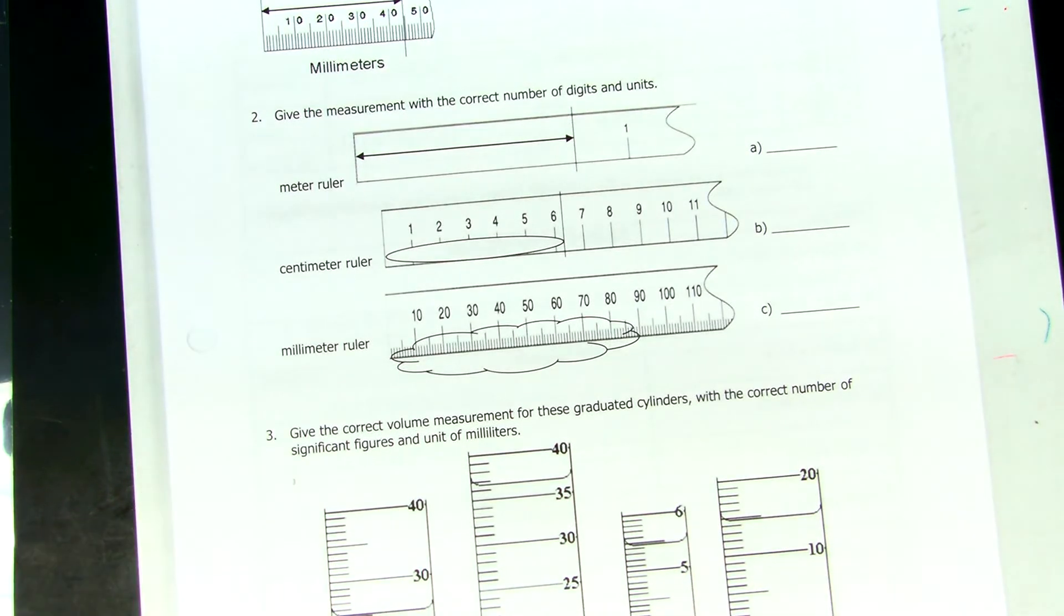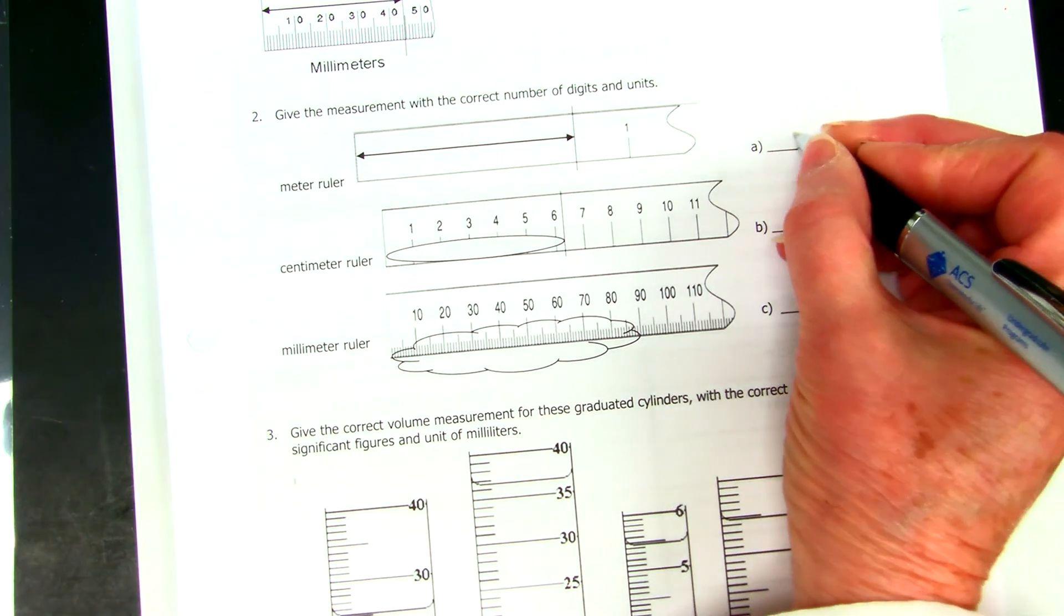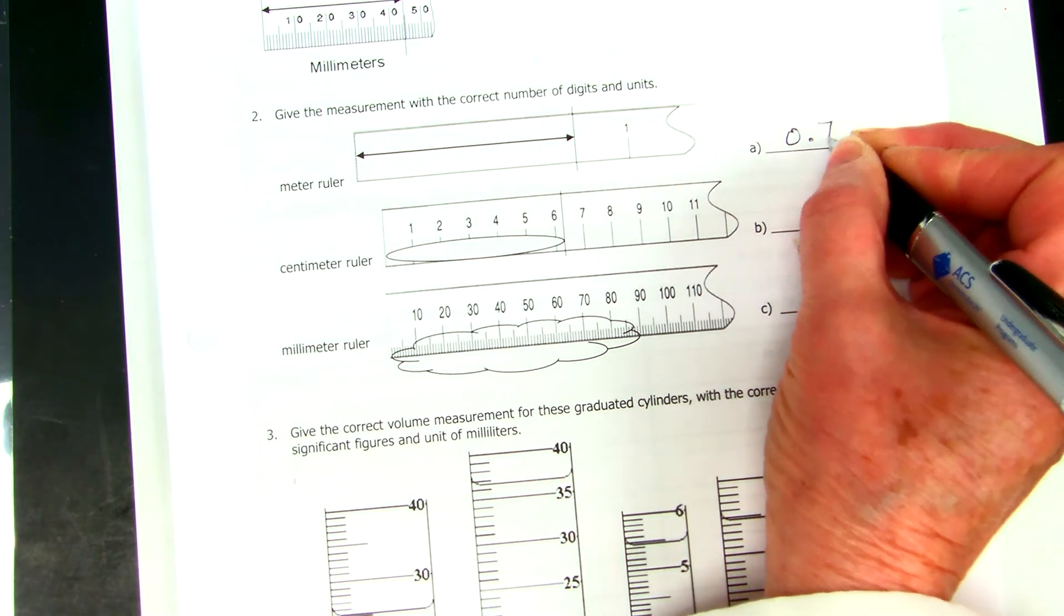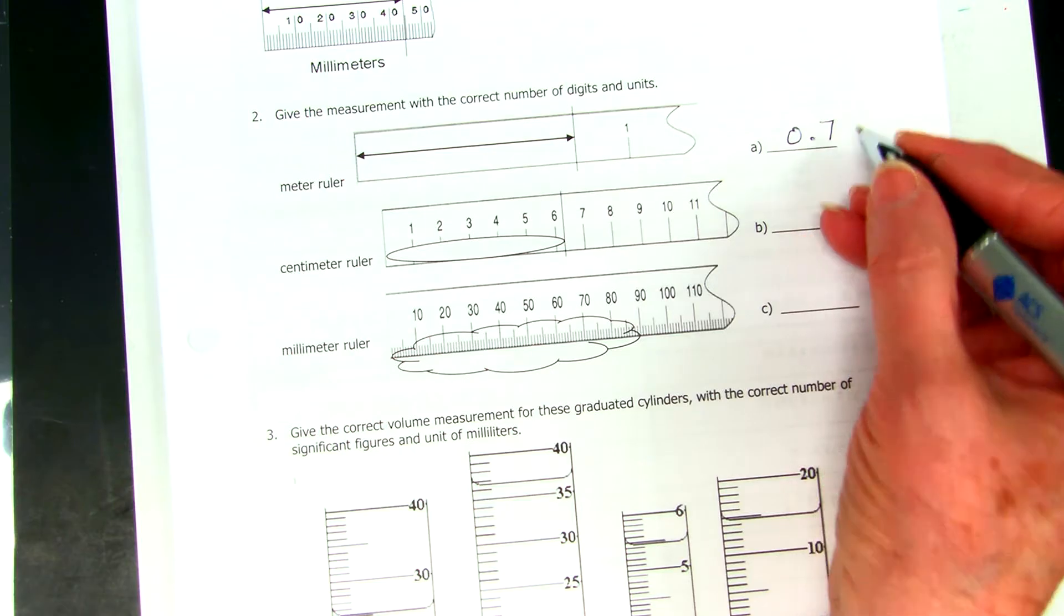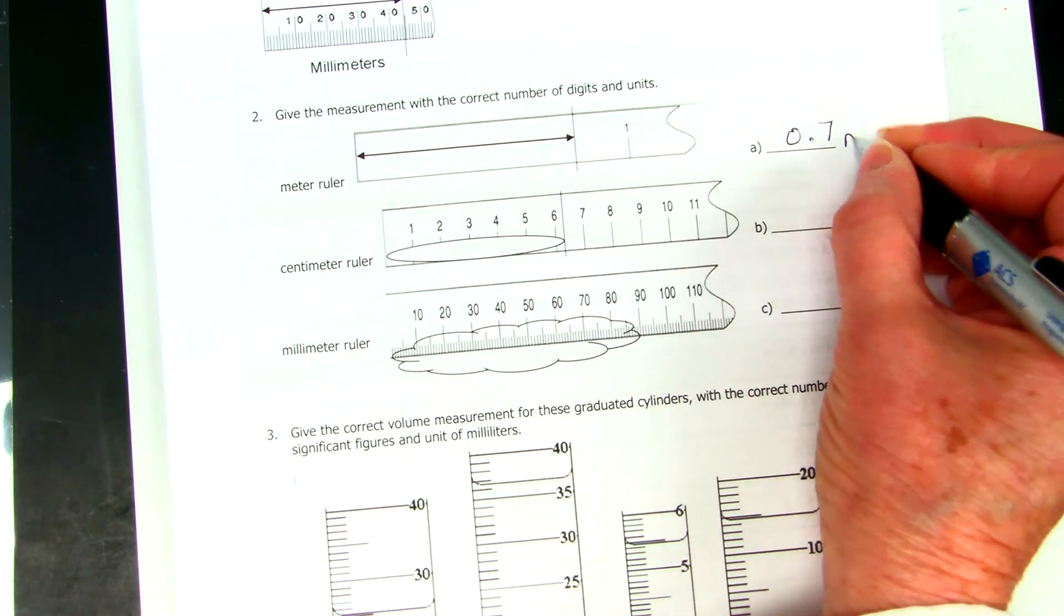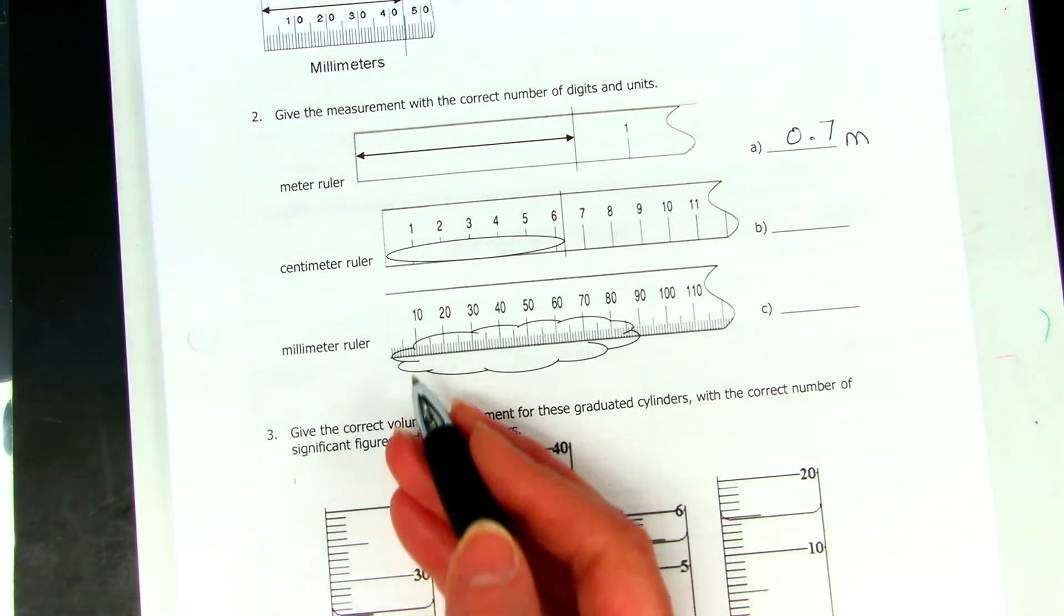Okay, let's look at the next one, Reagan. Okay, 0.7. And, did you put a unit on there? Meters, because it's a meter ruler.